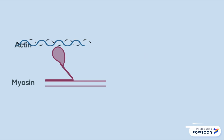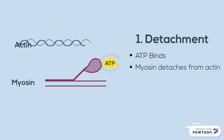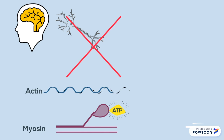This brings us back to where we began: detachment. So to refresh and bring things into a full circle, another ATP molecule binds to myosin, causing it to detach and return to its resting state. The cycle continues until the brain ceases movement, preventing an action potential. Therefore, actin returns to its normal shape and no binding can occur.